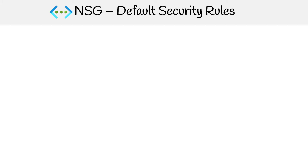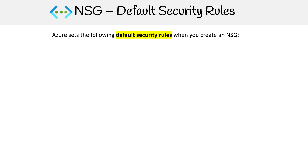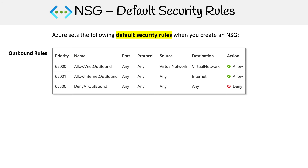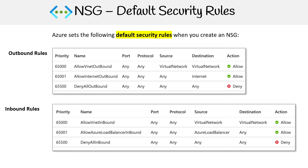Let's take a look at some of the default security rules that NSG sets for you. When you create an NSG, you're going to have some created for you by default, and that's going to be for outbound rules and inbound rules. For inbound rules, you're going to be able to accept any virtual networks through the NSG, it's going to allow Azure Load Balancer to make its way in, and it's going to deny everything else.